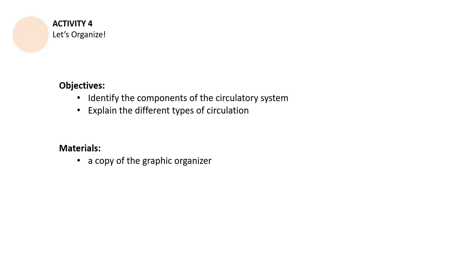And then explain the different types of circulation. I know that we have already talked about them, but we are going to do this activity for us to know specifically what we know about them. We need to be able to explain them too, not just know them. For the materials, you need to have a copy of the graphic organizer. You will be finding it in page 14 of your learner's module, unit one, module one. Remember, it is in the first slide.